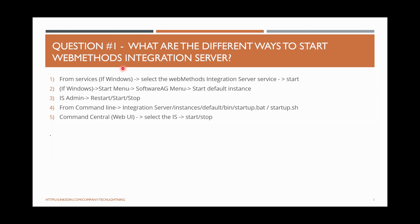What are the different ways to start the webMethods Integration Server? As we know, the Integration Server is a core runtime engine for webMethods in order to run different services. So how do we start or stop the Integration Server? If you have Windows, we have the Windows Services option. You go to Run, type services.msc, open the services window, find the webMethods Integration Server with the version, and you can start it from there.